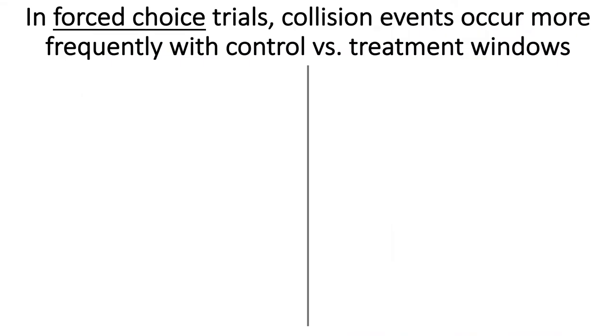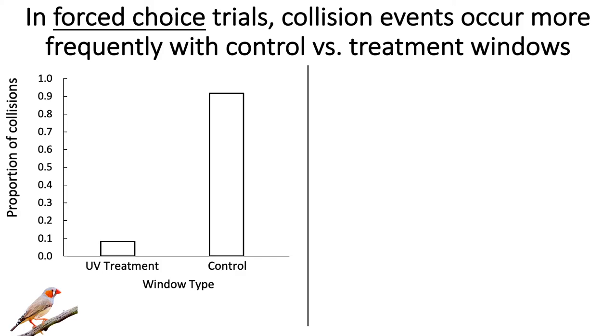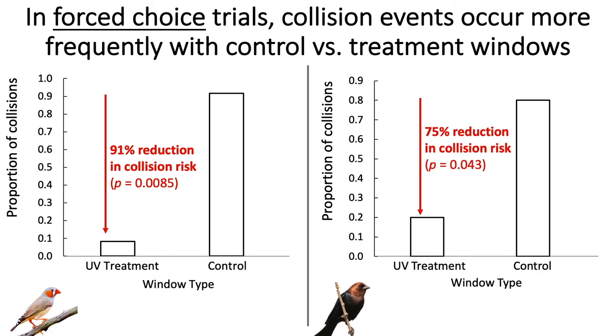We found that in forced choice trials, collision events occur more frequently with control windows than treatment windows. This is true for both zebra finches, which experience 91% fewer collisions with UV-treated windows, and for cowbirds, which experience 75% fewer collisions with treated windows.